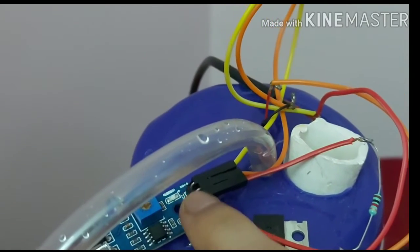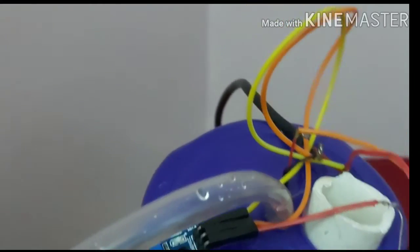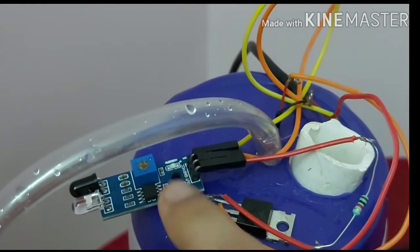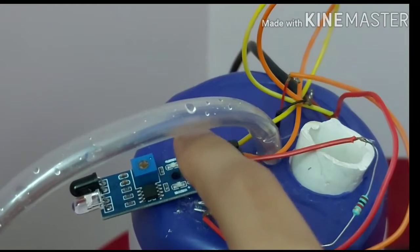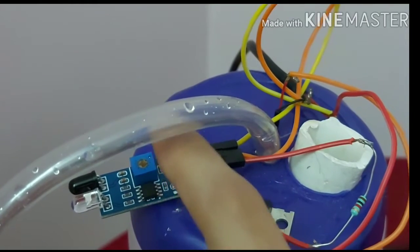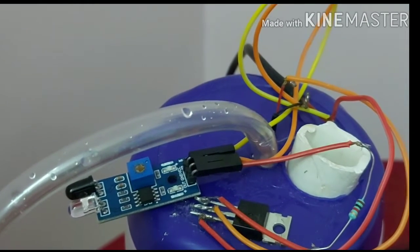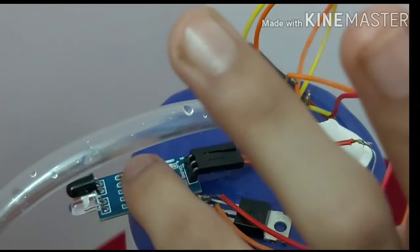And in the sensor, this is called output pin, OUT. This is GND pin - ground means negative pin. And this is VCC means positive pin. And this is the preset.